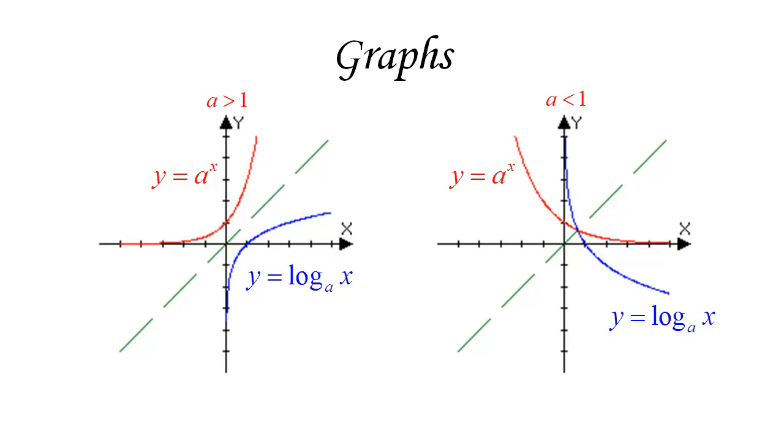In fact, the base we're going to use is the number e — the same one used as the standard base for exponential functions. Since we've constructed logarithms as inverses of exponentials, we should be able to transfer a whole bunch of properties from what we know about exponentials to what we can find out about logarithms.